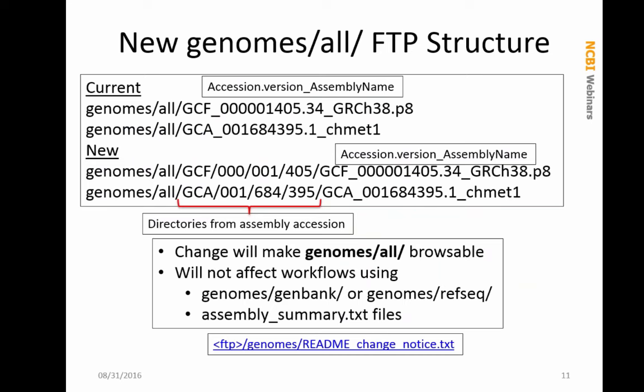We are going to be changing the structure of the GenomesAll directory very soon. In principle the things I am showing you today will not be affected by this change, because you will still be getting paths to the directories and they will just simply change. We are going to make hierarchical directories so you can browse them — the directory structure will be based on the assembly accession number, where every three digits represent another level in the directory tree. You can still browse the GenomesGenBank or GenomesRefSeq directories and use assembly summary files and eDirect to get the new URLs.